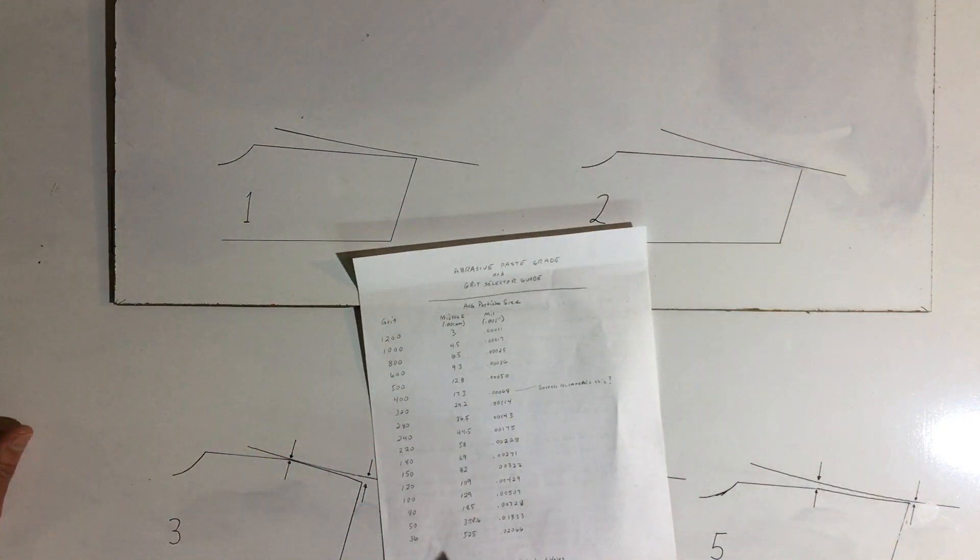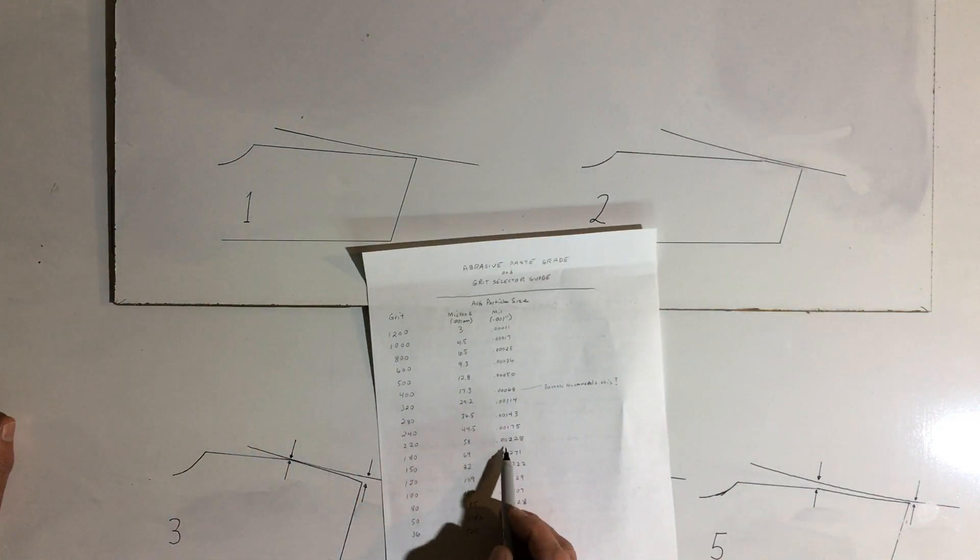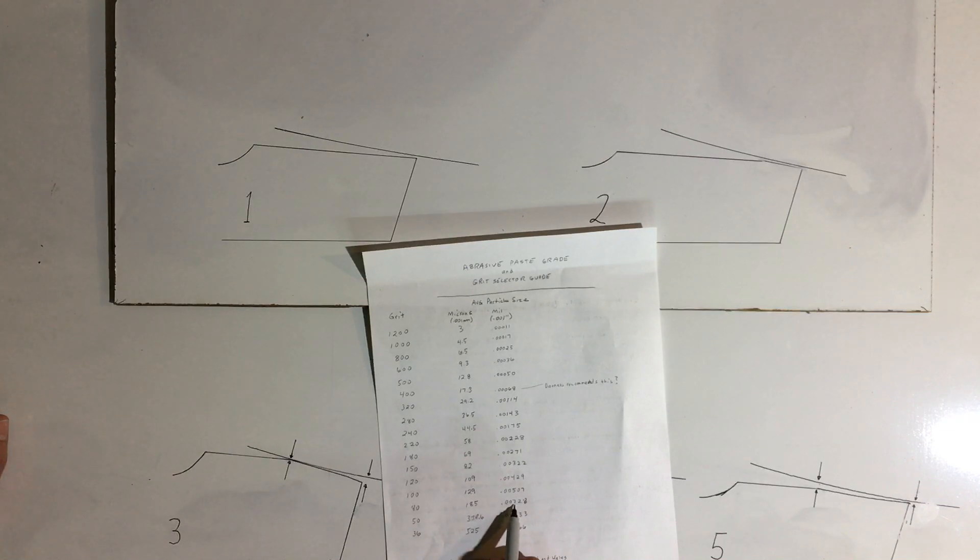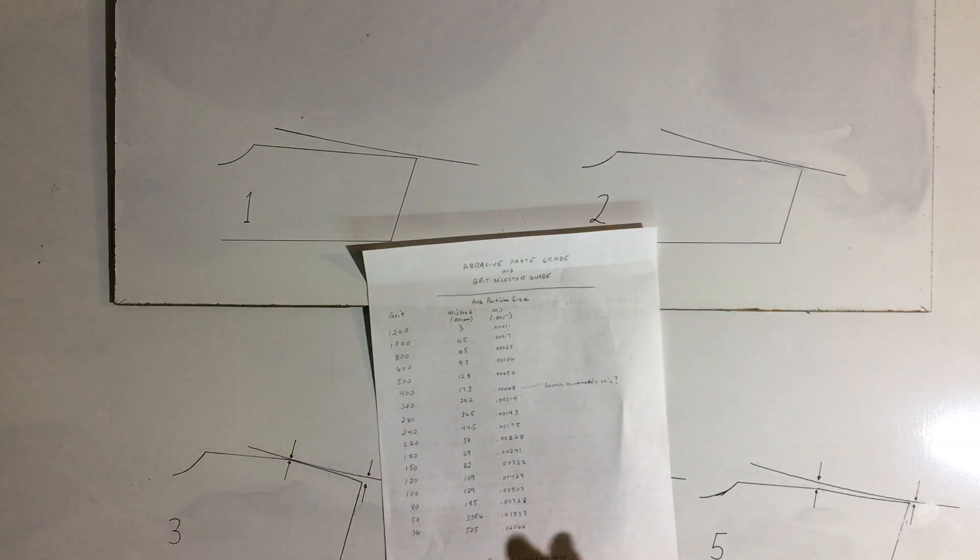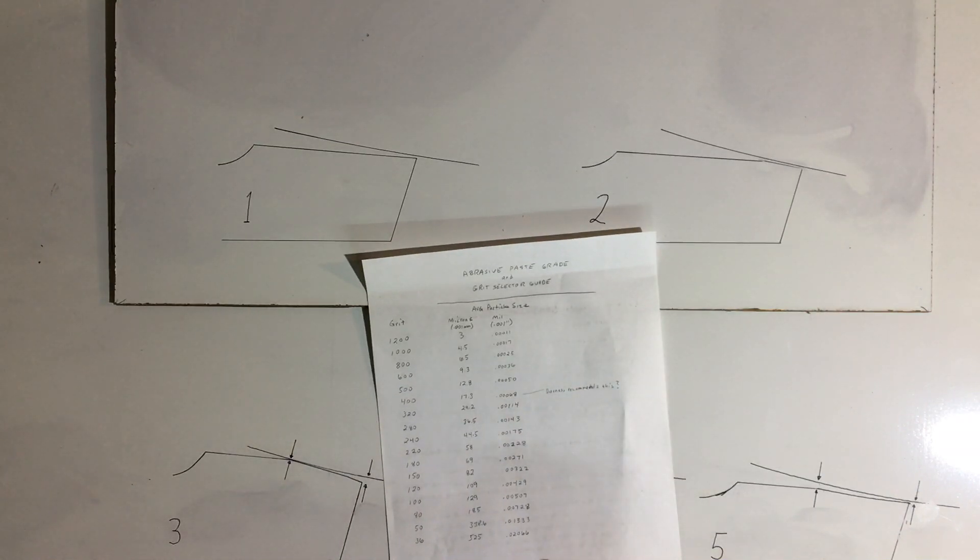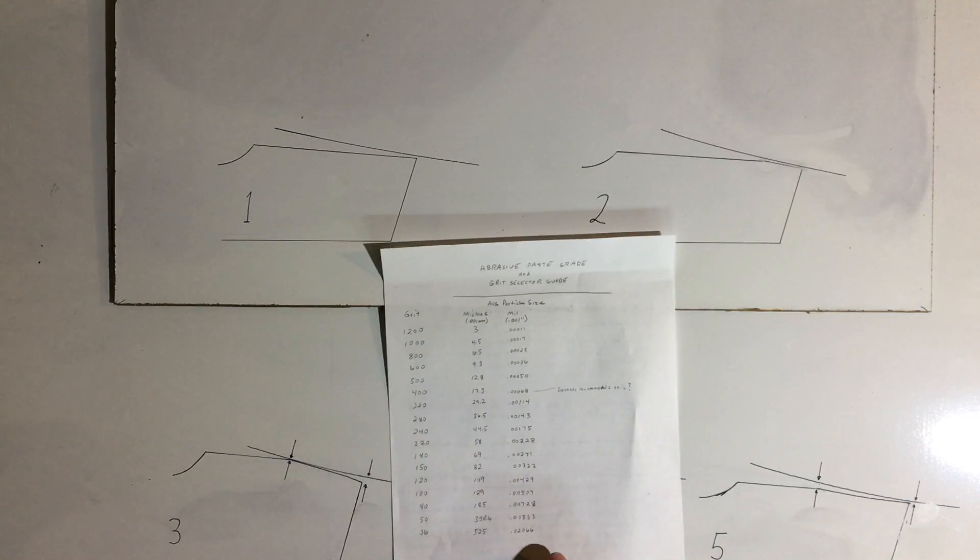So 220 grit is around 2 thousandths of an inch average abrasive particle size. 80 grit is about 7 thousandths. That's when you apply the compound before it starts to break down. I think the effect of average size of the abrasive particles is smaller than that, based on my experience.